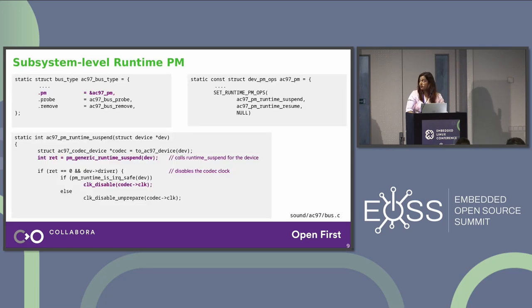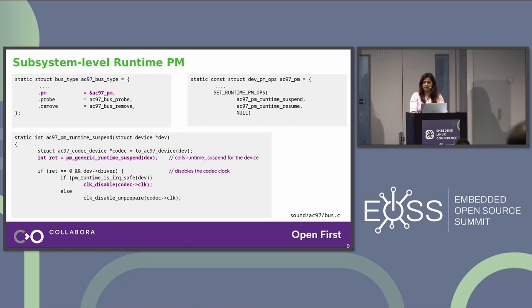This is an example of how bus-level runtime PM looks. There are PM runtime suspend and resume functions at the bus level. If you check the code for PM runtime suspend, it internally calls pm_generic_runtime_suspend, which will actually suspend the device associated with that particular bus. So if this bus is used by two or three devices, it can directly suspend at the bus level.